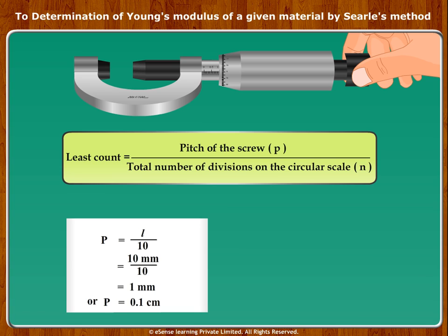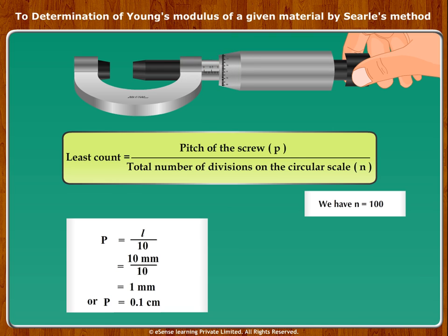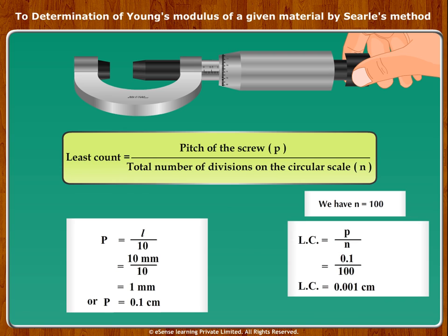Now note the number of divisions on the circular scale N. We have N equal to 100. Therefore, least count (LC) of the micrometer is equal to P upon N, equal to 0.1 upon 100, which is equal to 0.001 centimeter.